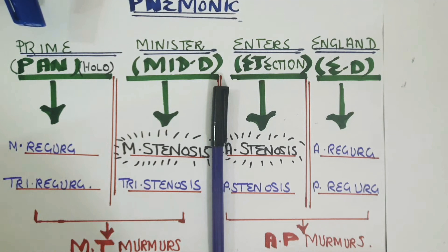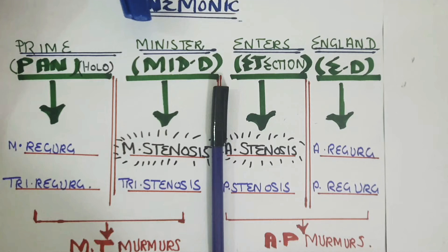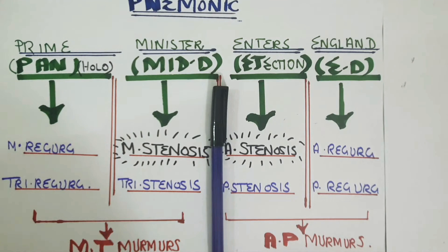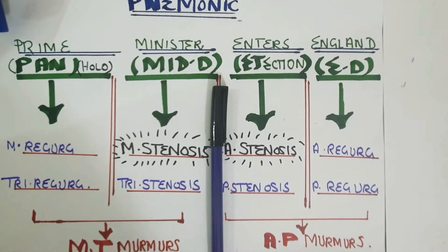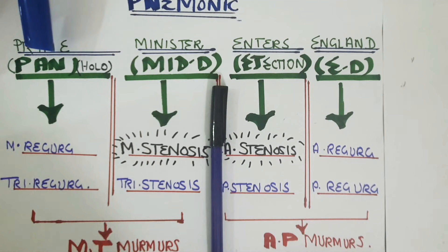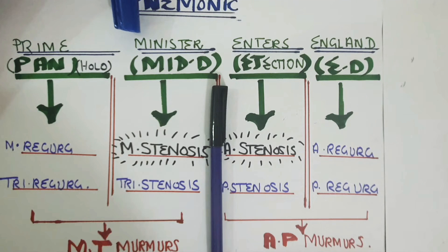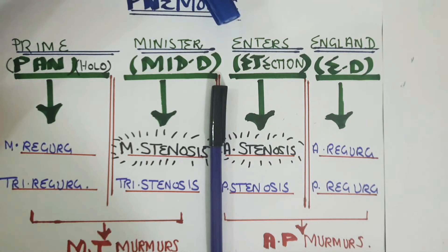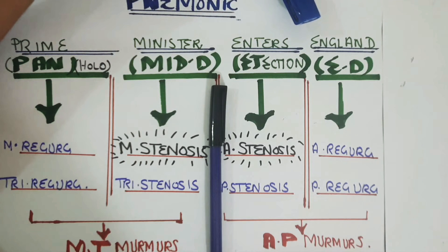The sentence is: 'A Prime Minister Enters England.' Every word shows a different murmur category. 'Prime' — P indicates pan-systolic murmurs, also called holosystolic murmurs. 'Minister' — M stands for mid-diastolic murmurs. 'Enters' — E stands for ejection systolic murmurs. And the E in 'England' stands for end-diastolic murmurs.